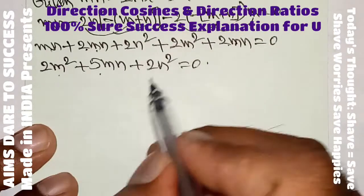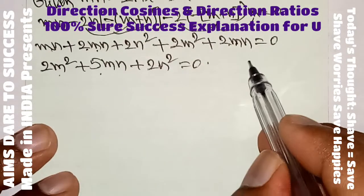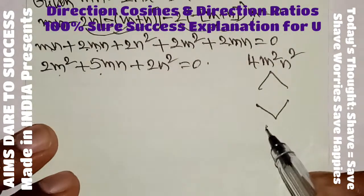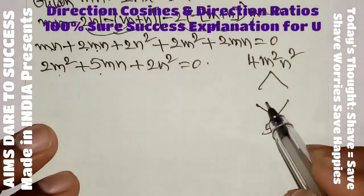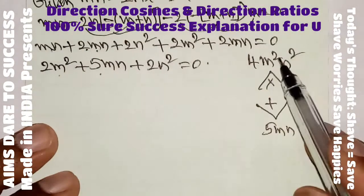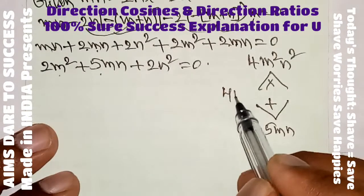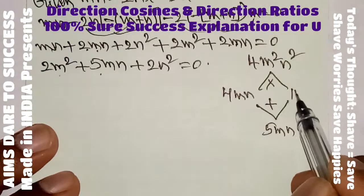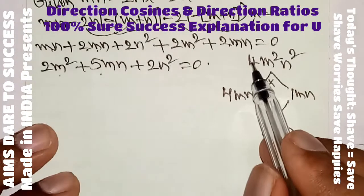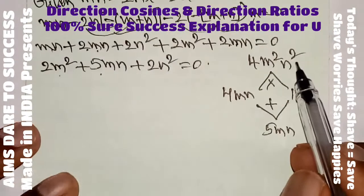Now I want to factorize. To factorize, multiply the first and last terms: 2m squared times 2n squared equals 4m squared n squared. The middle term is 5mn. I need two values that multiply to 4mn and add to 5mn — that is 4mn and 1mn: 4 plus 1 equals 5, and 4 times 1 equals 4. So I split 5mn into 4mn plus 1mn.